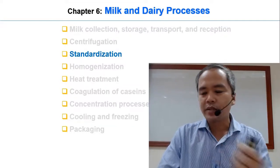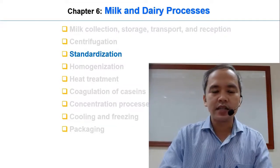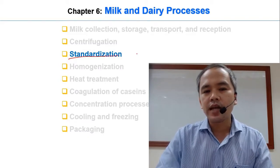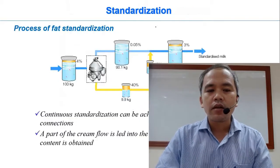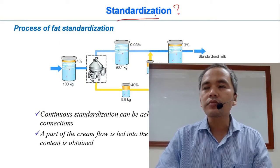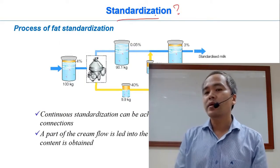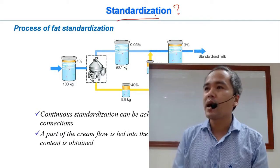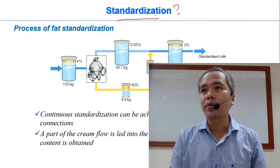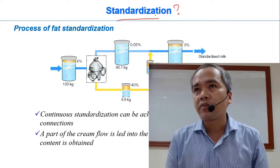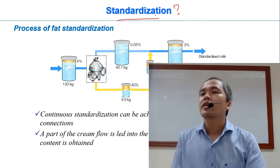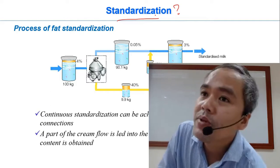Now we go to the next process which is standardization — to standardize the fat content. The question first is: why do we need to do this? The fat content of milk is somehow varied because of certain factors like the breed of the cows, the feed of the cows, the husbandry conditions, the age of the cows, and so on.